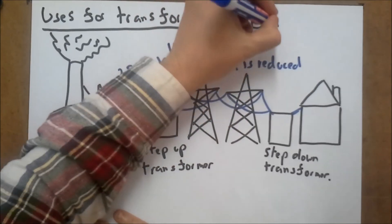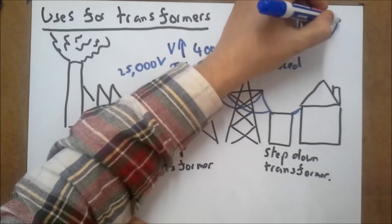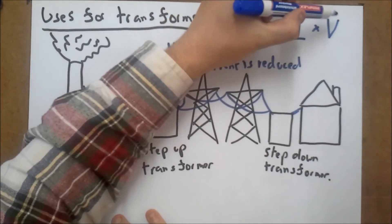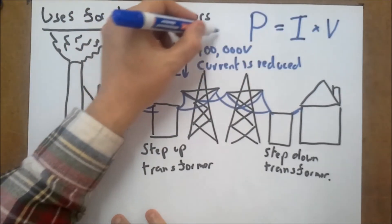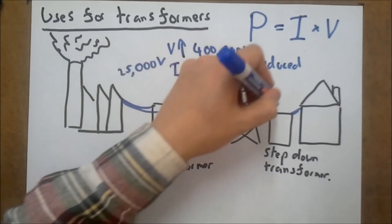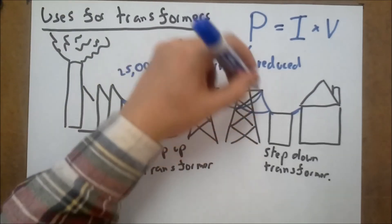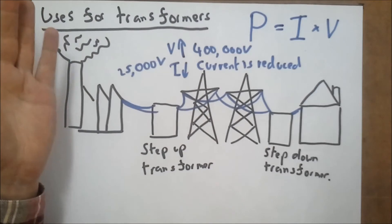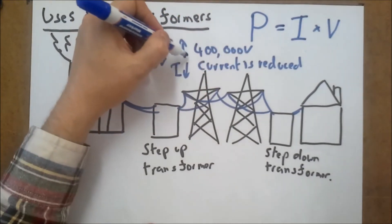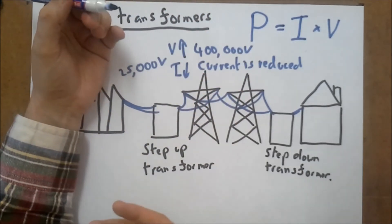We've got the formula P = I × V. If I increase the voltage and I want to get the same amount of power, I can actually have less current. If I increase the voltage like I'm doing here, I can have less current going through my wires. The reason why you don't want current going through the system is that current generates heat in wires — effectively you're heating the countryside where all these wires go, which is a real waste of electricity. So in order to make this system more efficient, the voltage is stepped up so the current can be reduced, there's less heating in the wires, and basically the electricity companies save a lot of money.